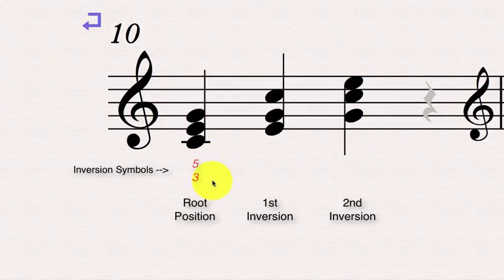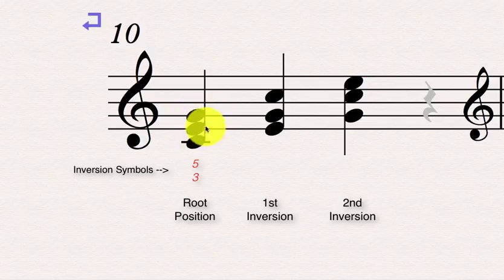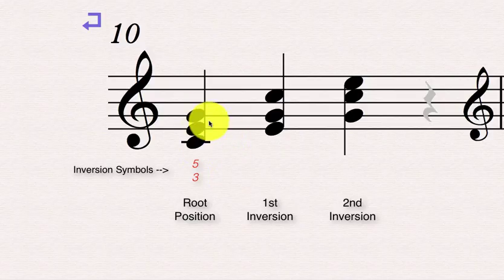Now you may be asking, well why are these numbers 5, 3, and why are they presented on top of each other like that? Notice the 5 and the 3 are indicating the intervals above the bass note. So in this case the root is the bass note. If you go up a fifth from the root, you get the fifth, and if you go up a third, you get the third. So following those as intervals above the bass note will give you the rest of the notes of the chord.